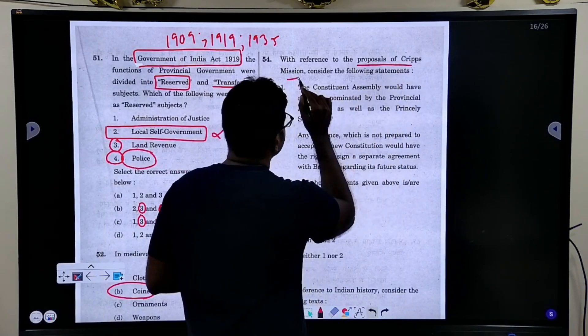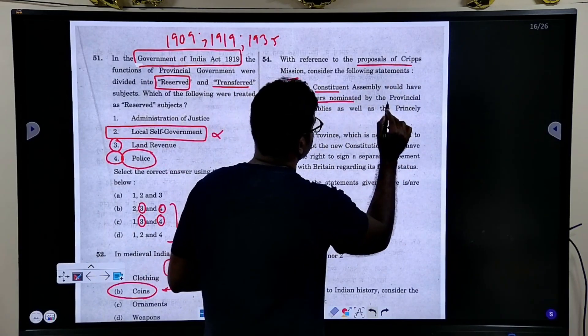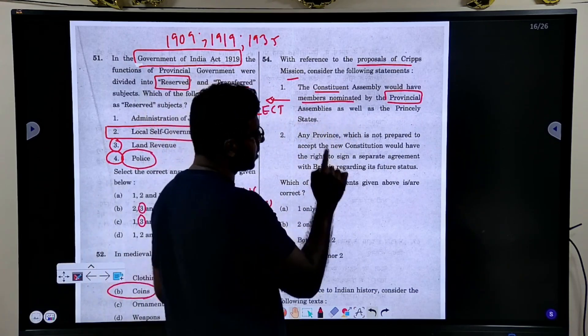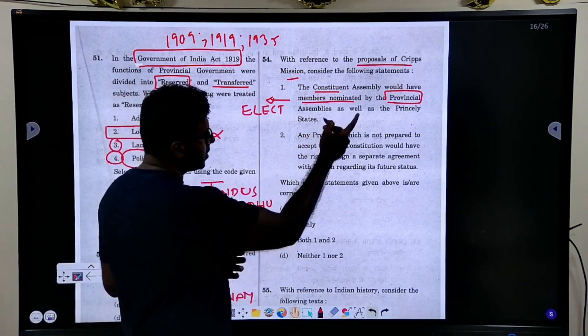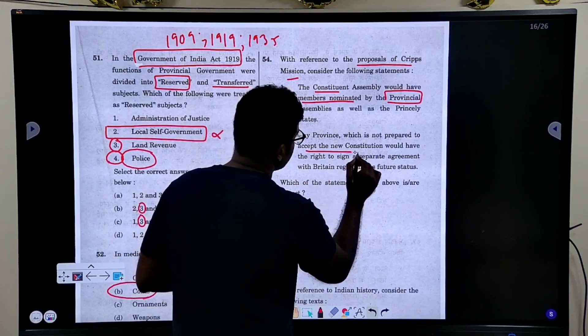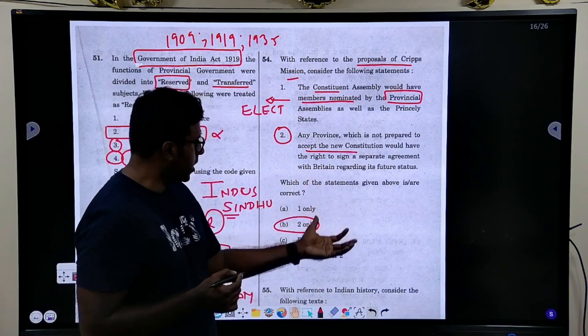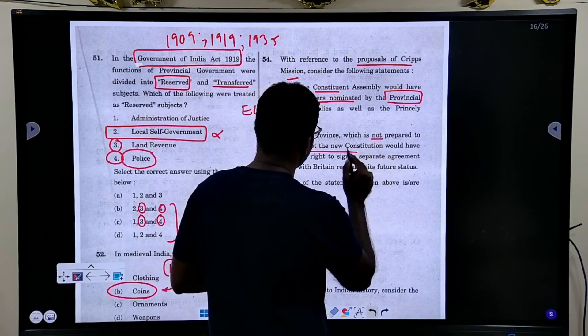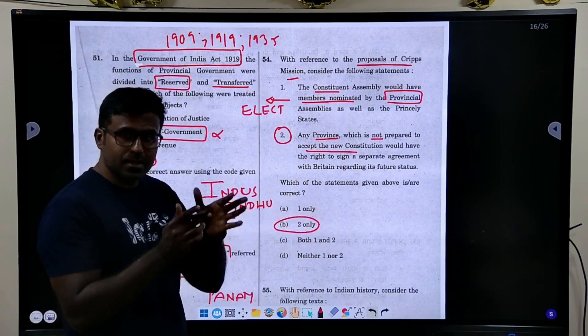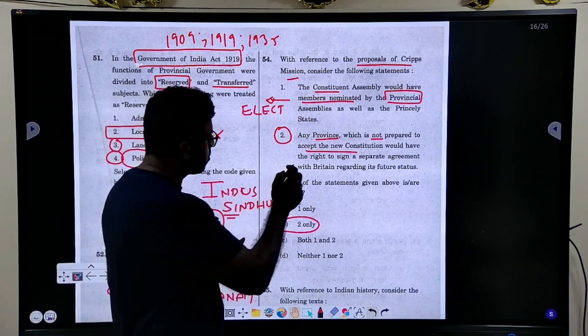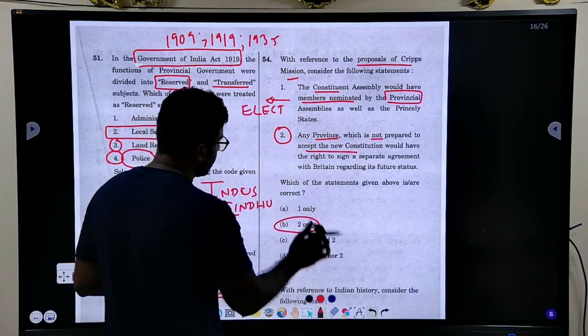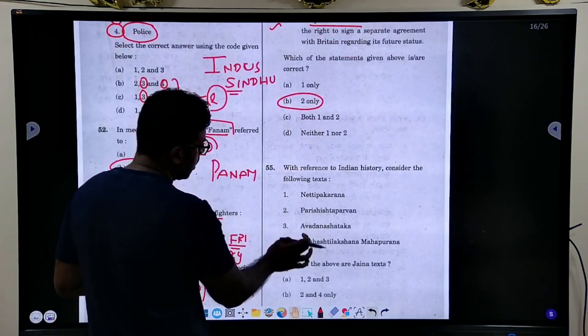Now come to this, proposals of CRIPS mission. CRIPS mission, Constituent Assembly members nominated by provincial. Provincial is elected. Provincial is elected. This princely states, they would have been nominated. But this is actually elected. And this was one of the issues cropping up all the time - giving any province which is not going to accept the Indian new constitution with a right to separate agreement. How is that possible? That is dismembering of our country. Both these parties did not accept it and hence this answer is correct. So B is the answer.